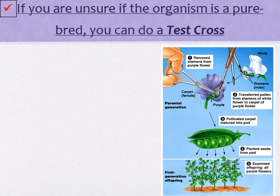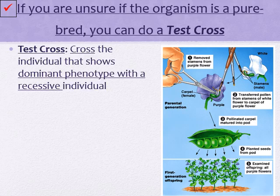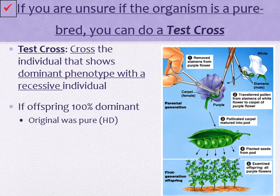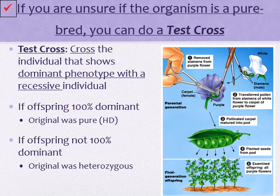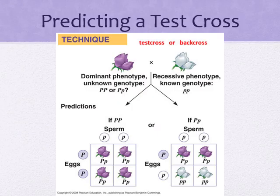Now one last thing we have to talk about is something called a test cross. If you're sure that an individual has the dominant trait but you want to know if it's a purebred, you can perform a test cross — crossing that individual with a recessive individual. If the offspring are 100 percent dominant, the individual was a purebred. Whereas if the offspring are not 100 percent dominant, then the original must have been heterozygous, because with a heterozygous individual, you'll see that recessive trait present in the genotype. Here on the left, this shows what happens if you have a dominant purebred, and on the right, what happens if you have a heterozygous hybrid.